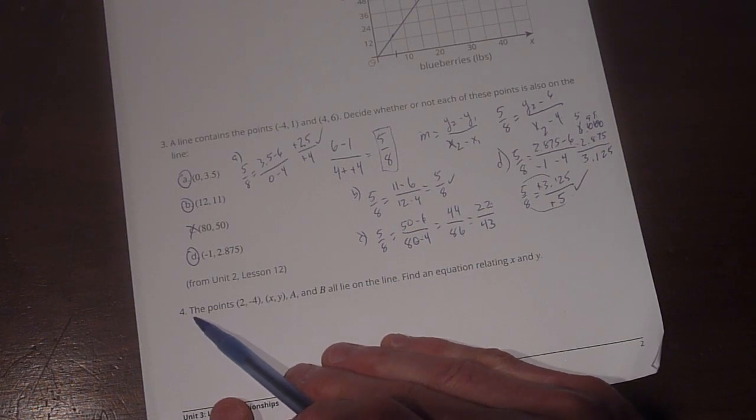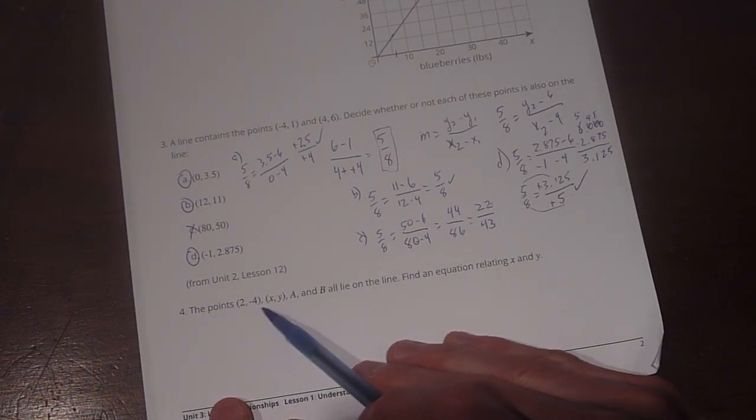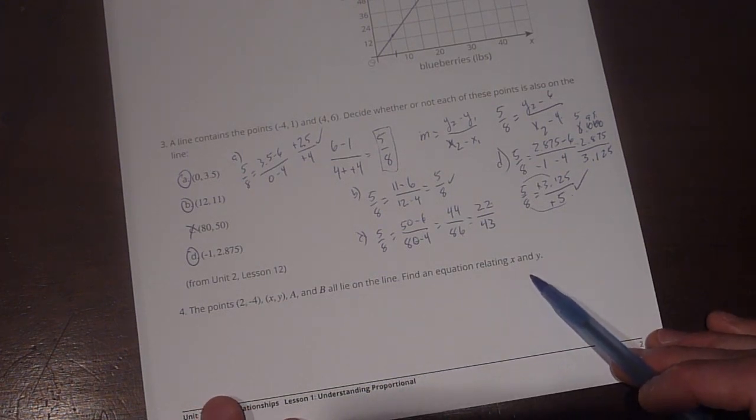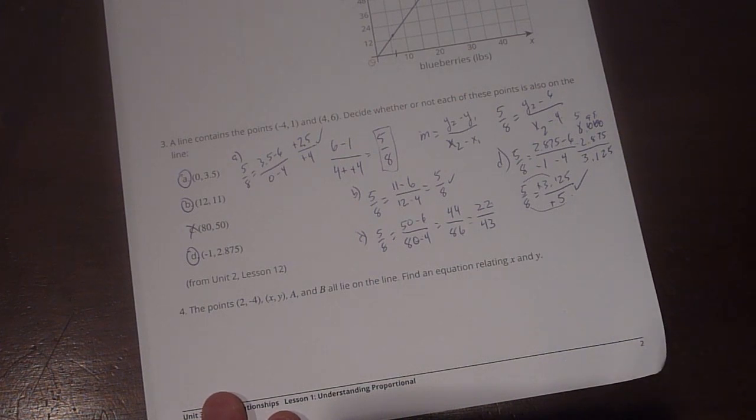The last one says the points (2, -4) and (x, y) a and b all lie on the line. Find the equation relating x and y. Alright, so for this one what we're going to do is we're going to think about what makes the most sense for how this works out.